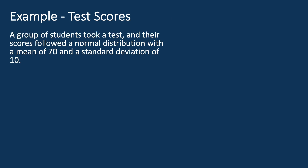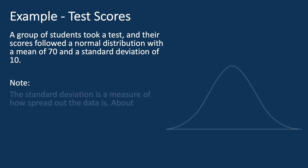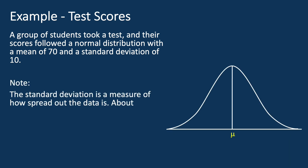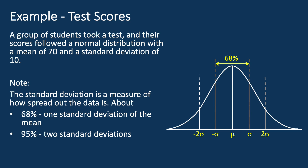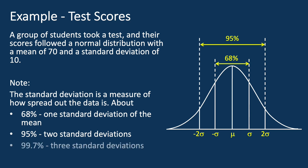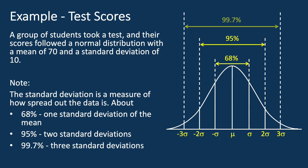Imagine a group of students took a test and their scores follow a normal distribution with a mean of 70 and a standard deviation of 10. The standard deviation is a measure of how spread out the data is. In a normal distribution, about 68% of the data points fall within one standard deviation of the mean, 95% within two standard deviations, and 99.7% within three standard deviations.